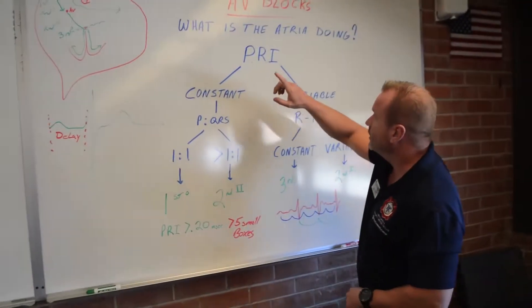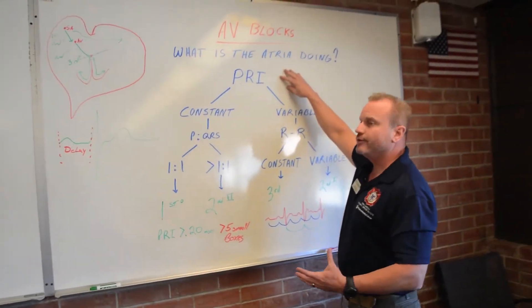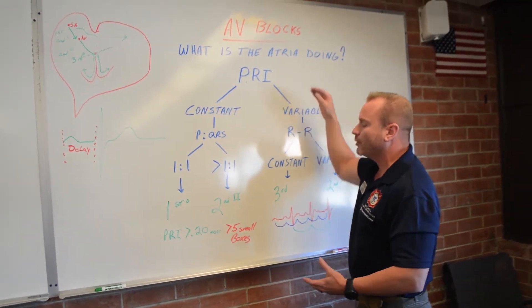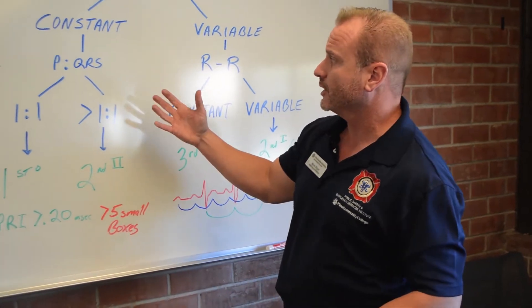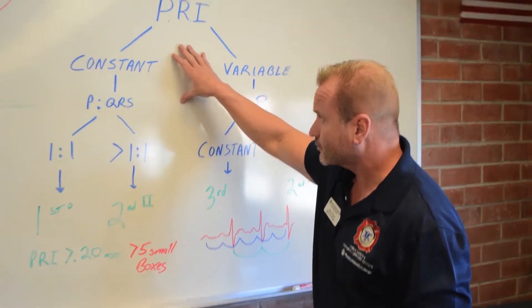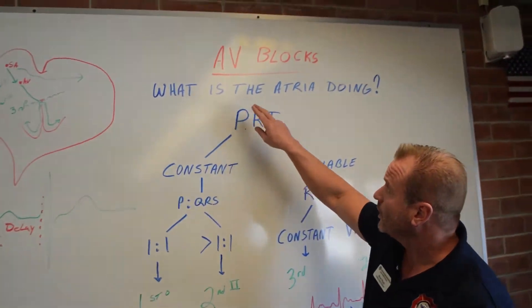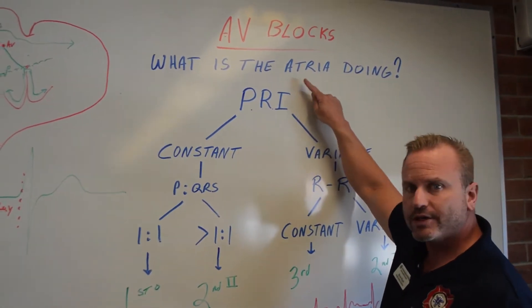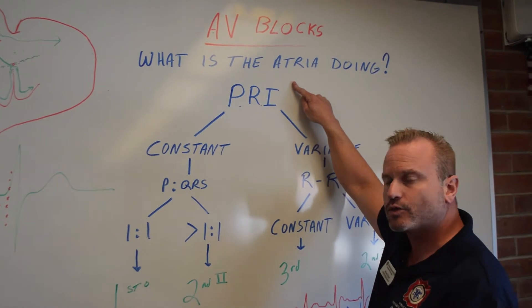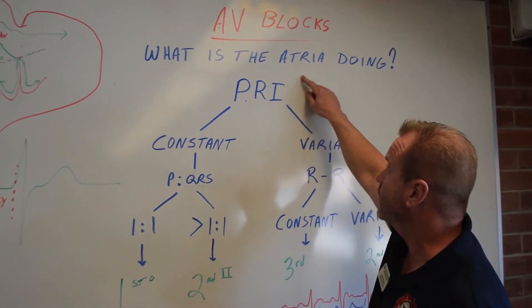So coming over here, how do we discern this? The paramedic students ask a lot, well, what's the difference between a second degree type one and a third degree? And is there significance of that? So whenever you're looking at blocks and trying to discern blocks, ask yourself, what is the atria doing? Because this is where our primary pacemaker comes from, is the atria.